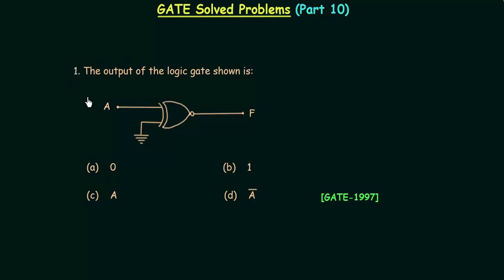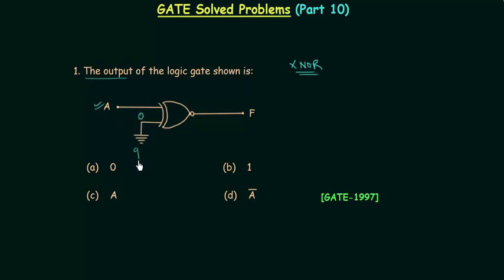In the first problem we have to calculate the output of the logic gate shown. The given logic gate is an XNOR gate with two inputs: first input is A and second input is zero, because the second input is connected to ground, and ground is low potential.